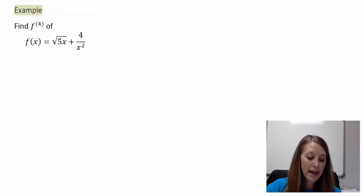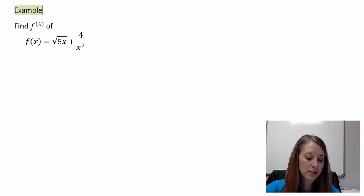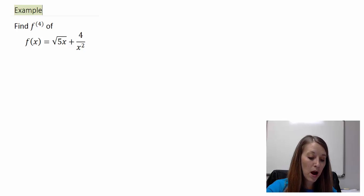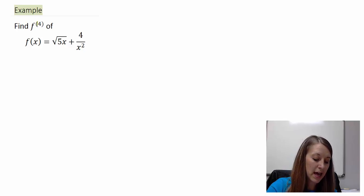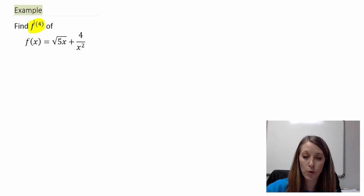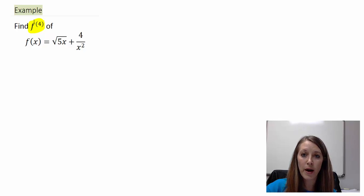I have an example here of f(x) equals the square root of 5x plus 4 over x squared. In this problem, we want to find f to the fourth — that means we want to take the fourth derivative. We're going to have to take the derivative four different times. I suggest that you pause the video and see if you can keep everything consistent all the way through your fourth derivative.